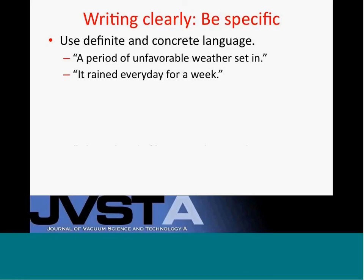Writing clearly is very important, and there are many aspects of how to write clearly. My first important point is to use definite and concrete language. For example, an indefinite, not specific enough sentence is 'a period of unfavorable weather set in.' That weather might be snow or hot weather — it's not very specific, and a period could be months, days, or hours. A more specific version: 'It rained every day for about a week.' Note that it's shorter and more specific — both the period and type of weather are clear.